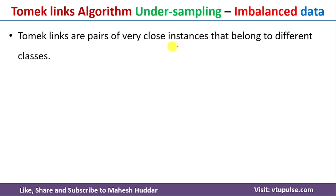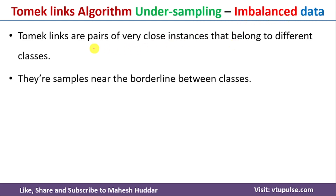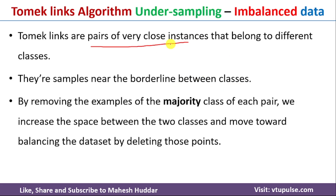TomekLinks are a pair of close instances that belong to different classes. Given a dataset, one class is the majority class and another is the minority class, making it an imbalanced dataset. What we need to do is identify a pair of very close instances near the borderline between classes, and then remove an instance from the majority class in that pair, so we reduce the number of majority class examples and move towards balancing the dataset.